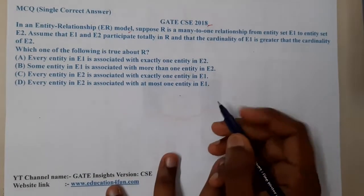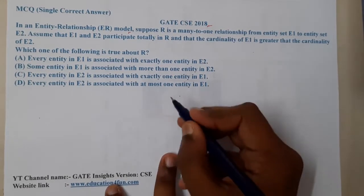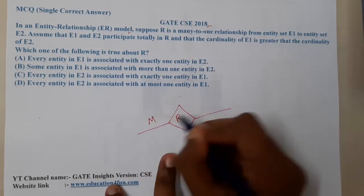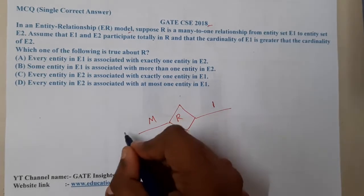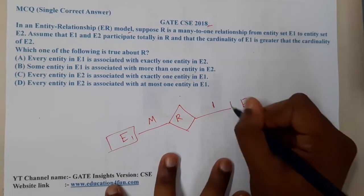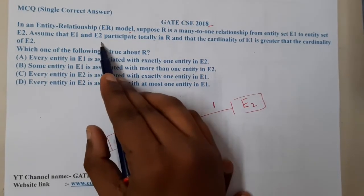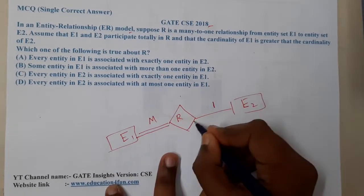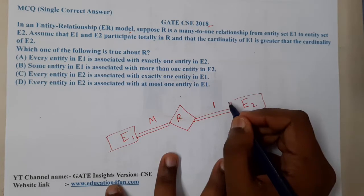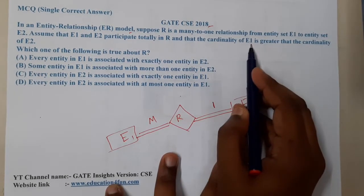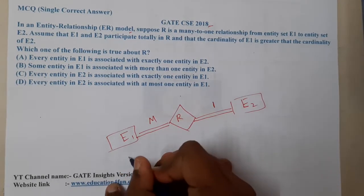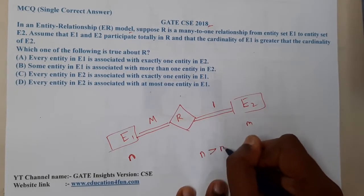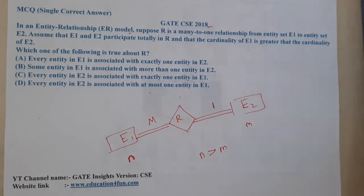This is a diagrammatical question. Suppose R is a many-to-one relation from entity set E1 to E2. Both E1 and E2 participate totally in R. The cardinality of E1 is greater than the cardinality of E2 — if E1 has count N and E2 has count M, then N is strictly greater than M, not greater than or equal.